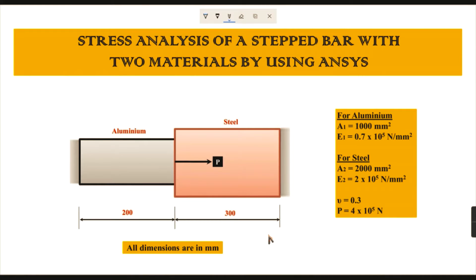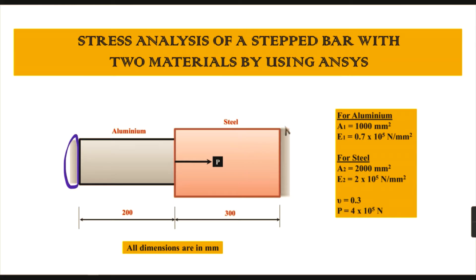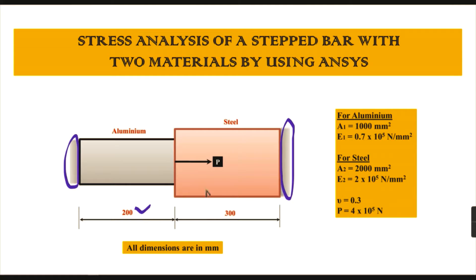Hello everyone, welcome to Mechanical Software Education channel. In this video you are going to learn about the stress analysis of a stepped bar with two different materials using ANSYS. Looking at this drawing, you can see two different materials: aluminum and steel. This is a stepped bar. The aluminum side — the left-hand side — is fixed, and for steel the right-hand side is fixed. The entire length for both materials is 500mm.